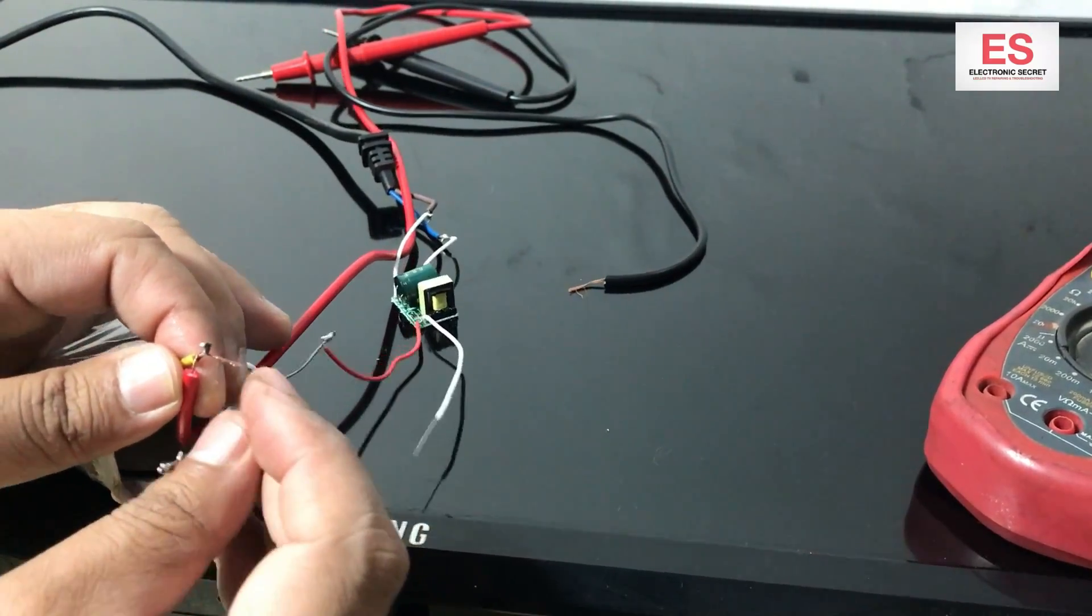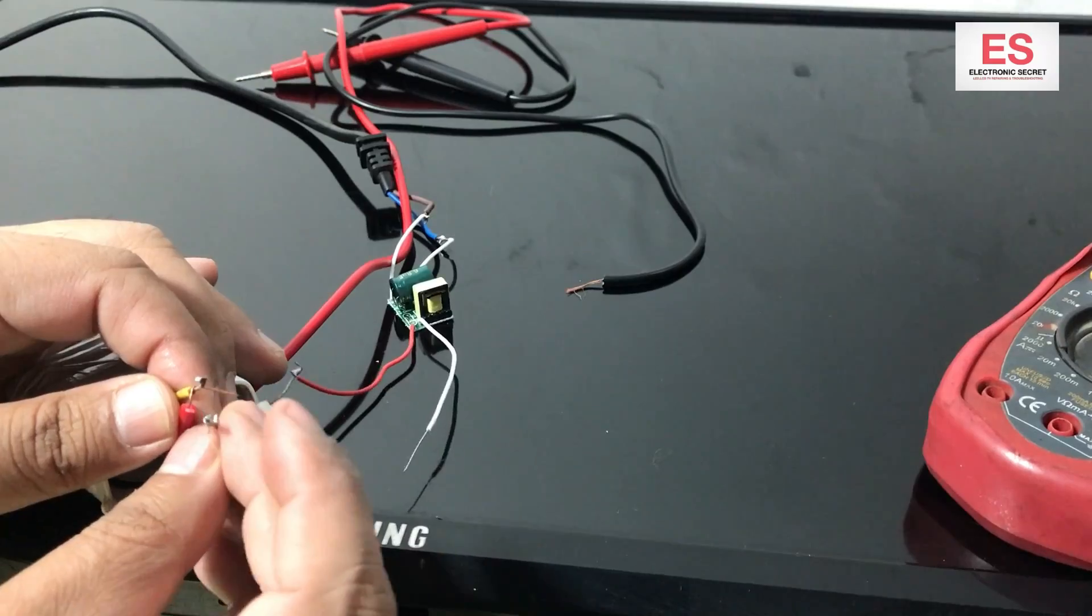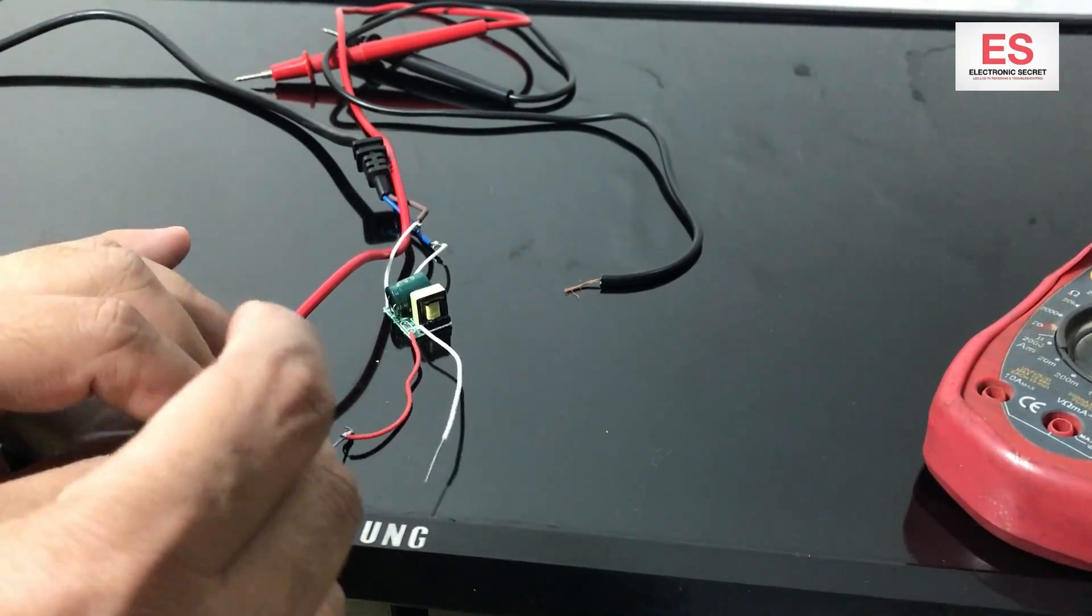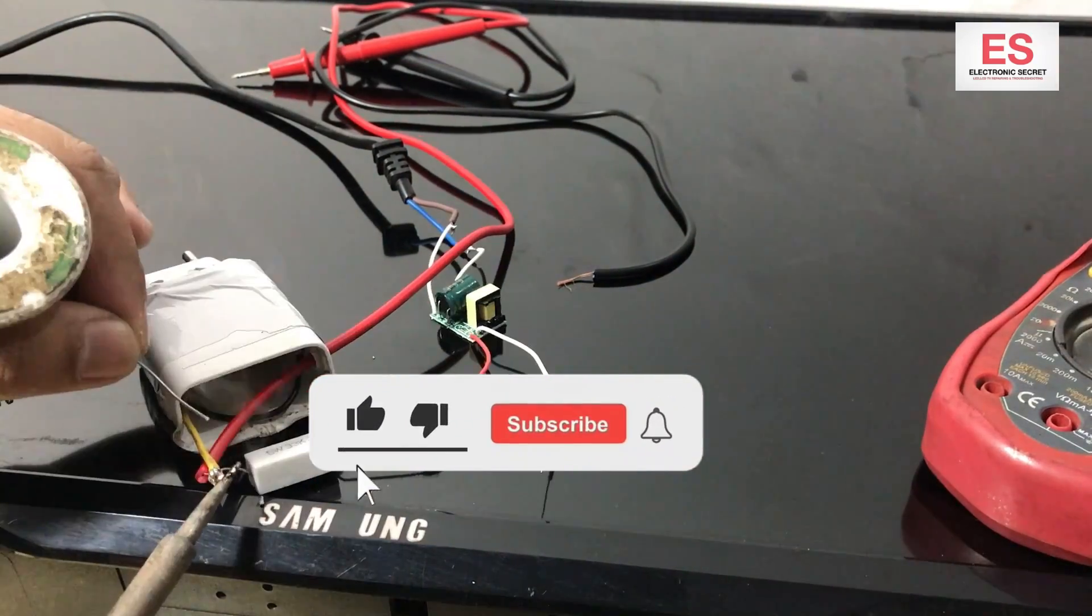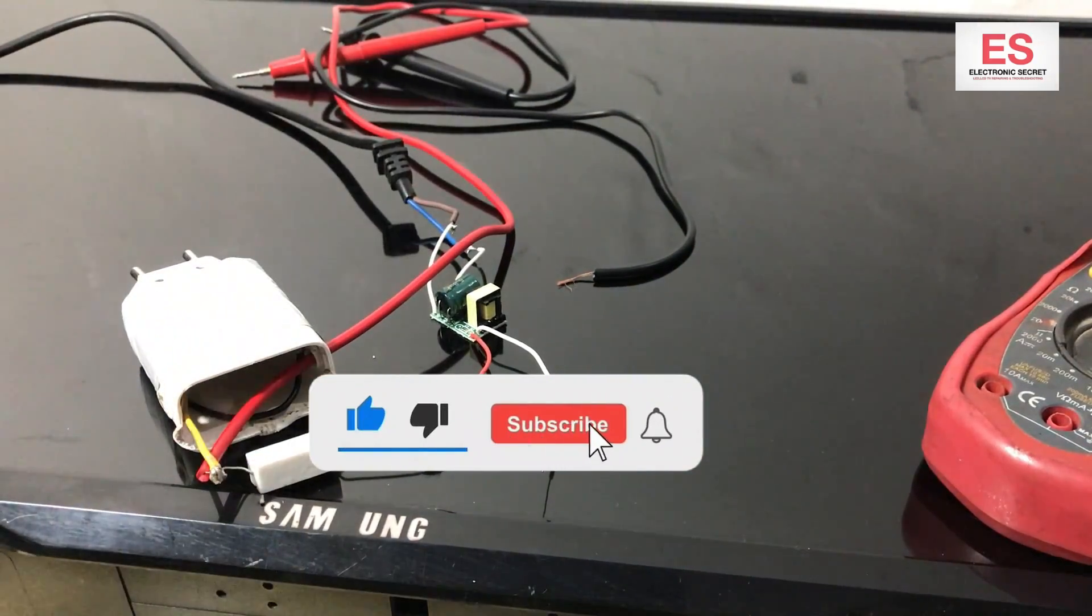Connect the resistor and solder these. Now one part is soldered, it's done from the other.